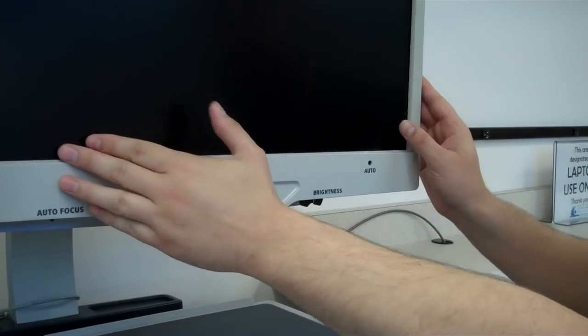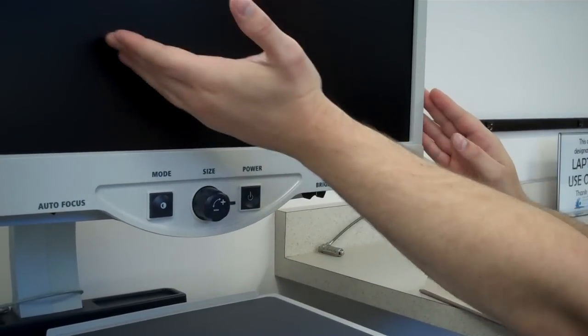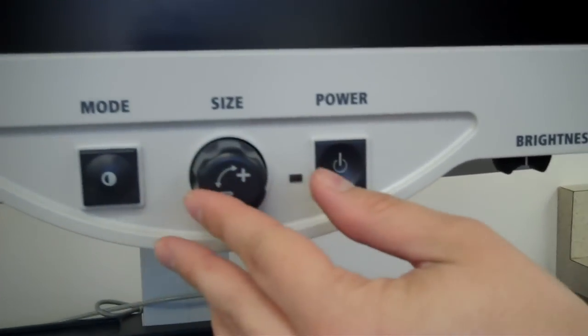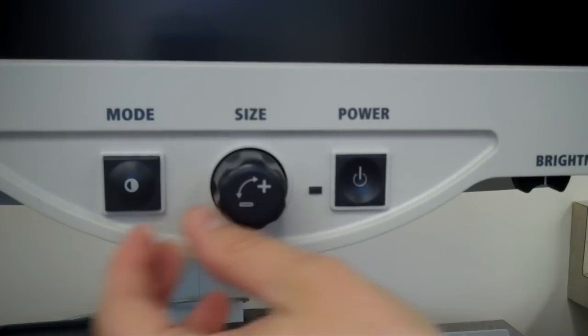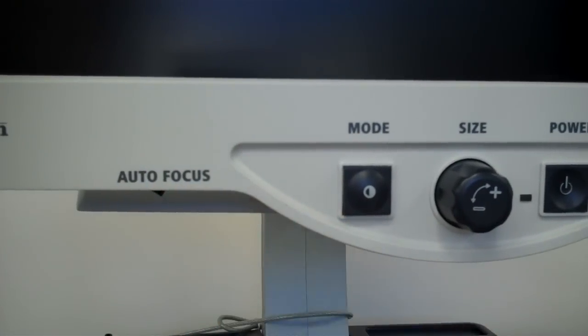This is the screen which allows you to see what you're viewing. Next, we have the power button, size, mode, autofocus, and the tray.